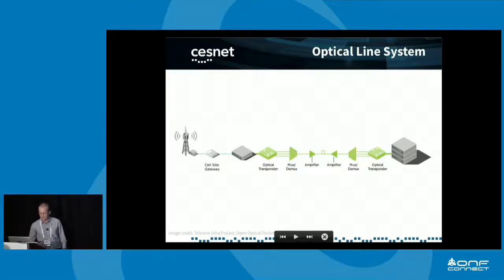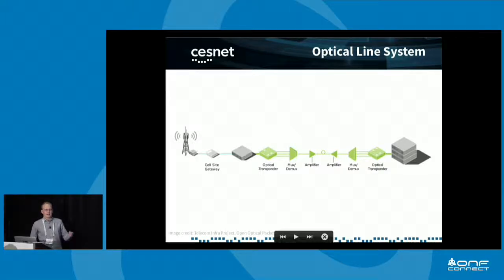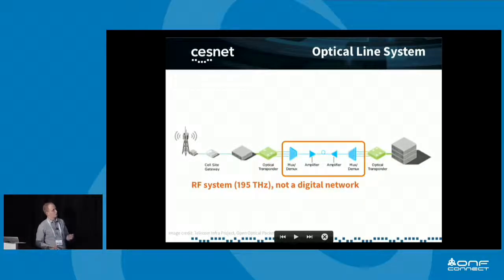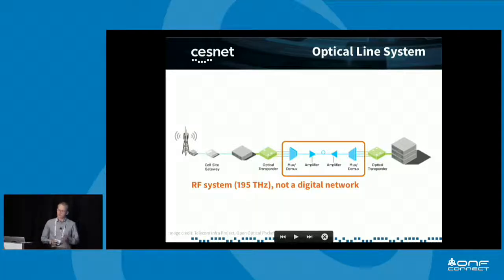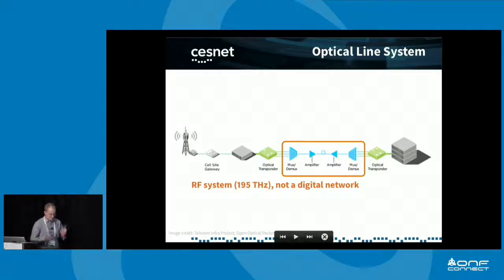When someone tests an optical line system, they usually show a picture like this one. Everything starts with a pair of transponders at both edges. These transponders plug into your L2 switch or L3 router on one hand, and on the other side they use a light signal suitable for long-range transmission. What I'm going to be talking about is what lives underneath these transponders. This open line system is a network, but not a digital network — it is essentially a network of analog waveguides carrying light, a high-frequency system carrying electromagnetic waves.